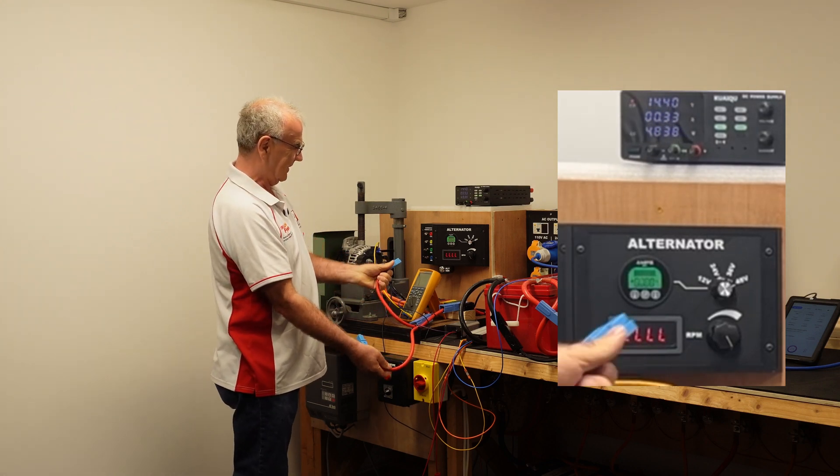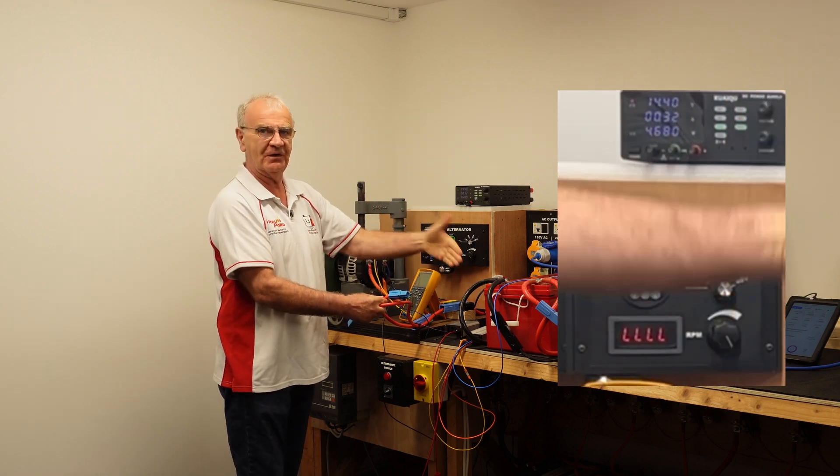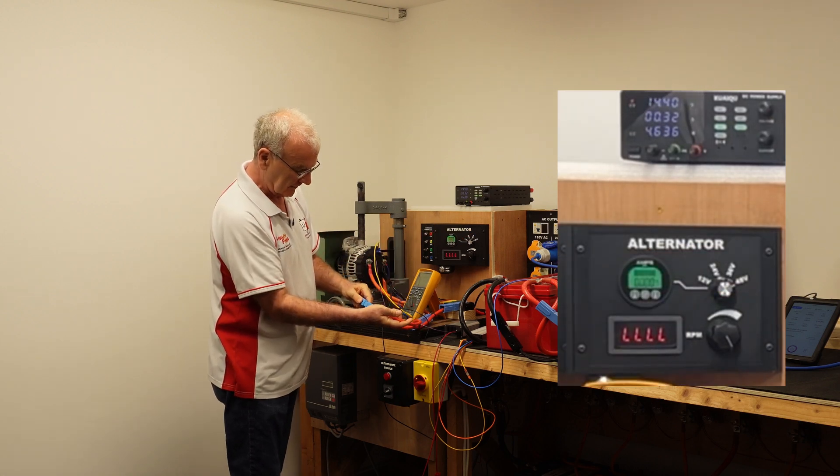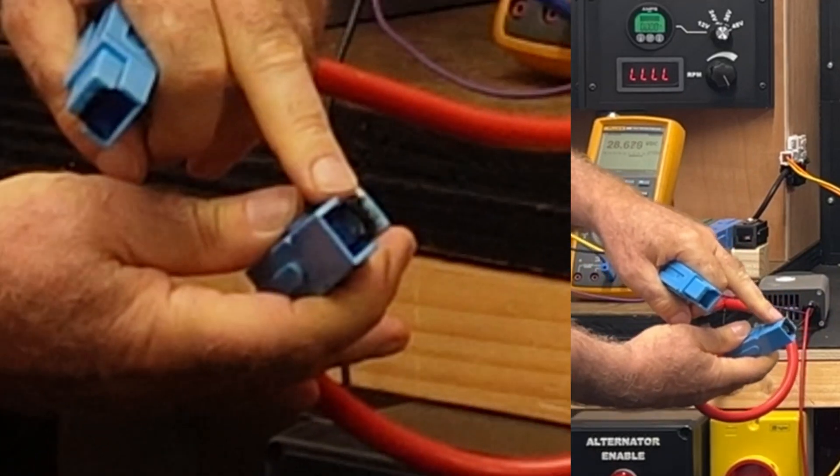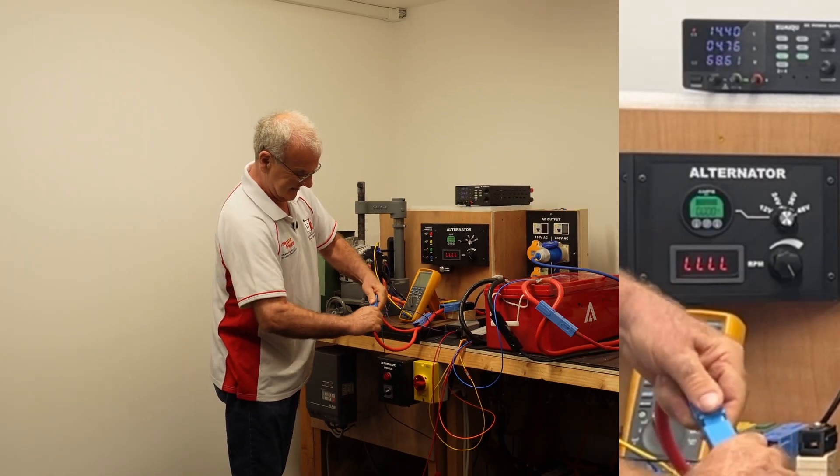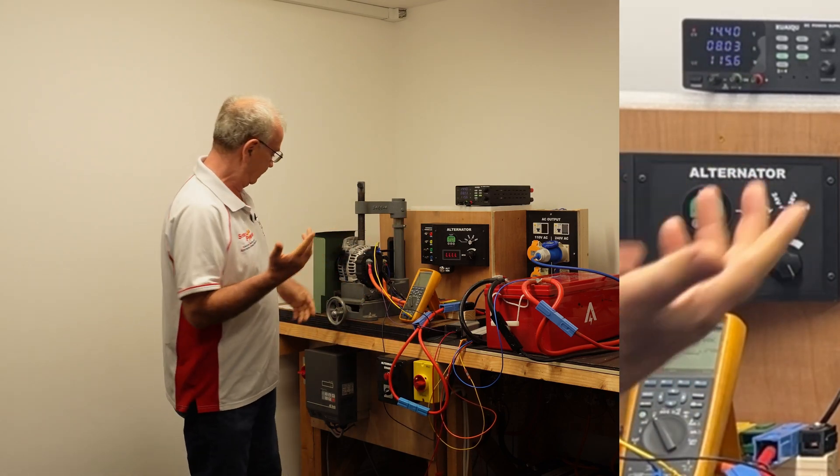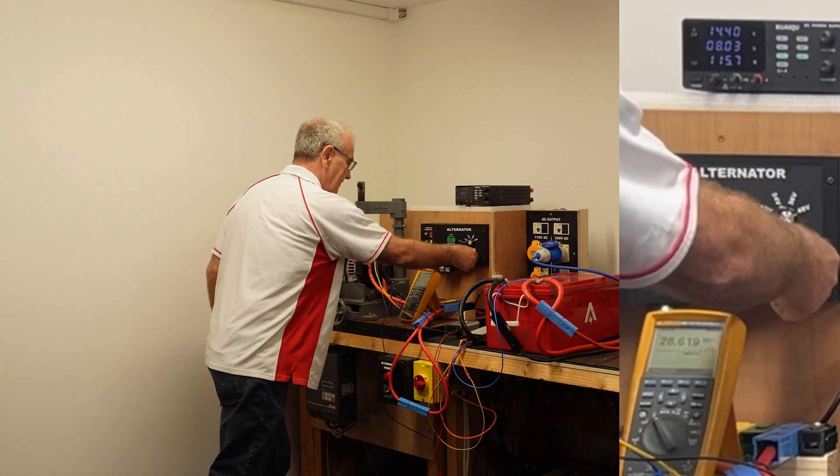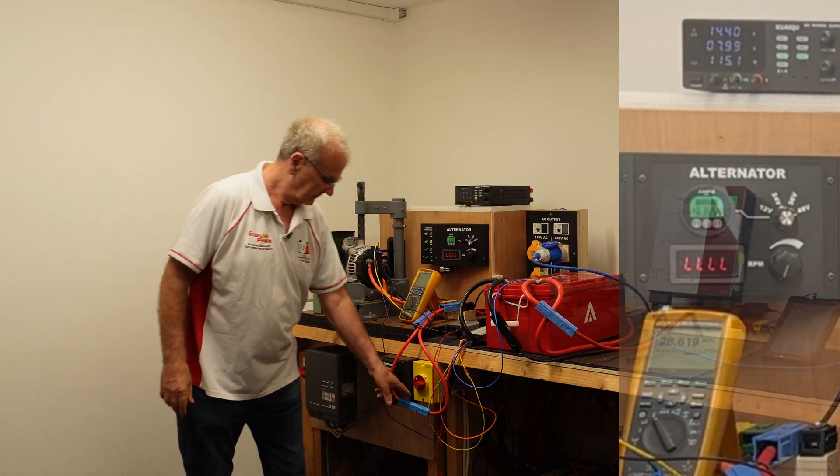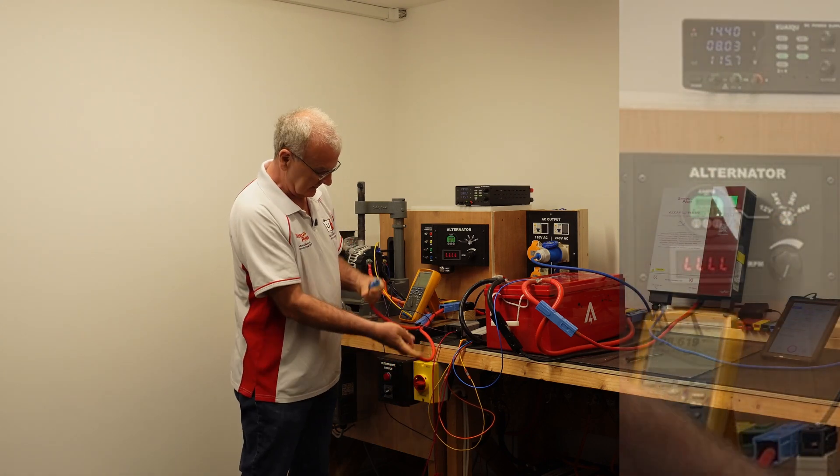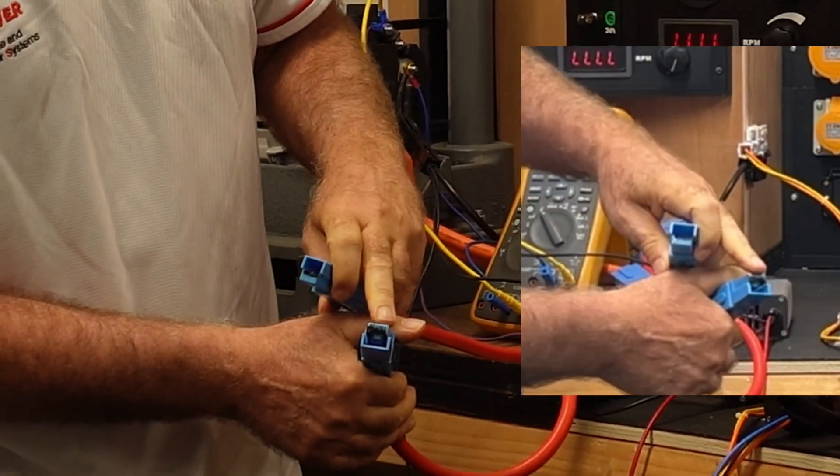Okay, the alternator is now zero amps. This is emulating the battery being full and the BMS shutting off. You can actually see here the burn on the unit. That's it back on again, and that's the alternator working again.